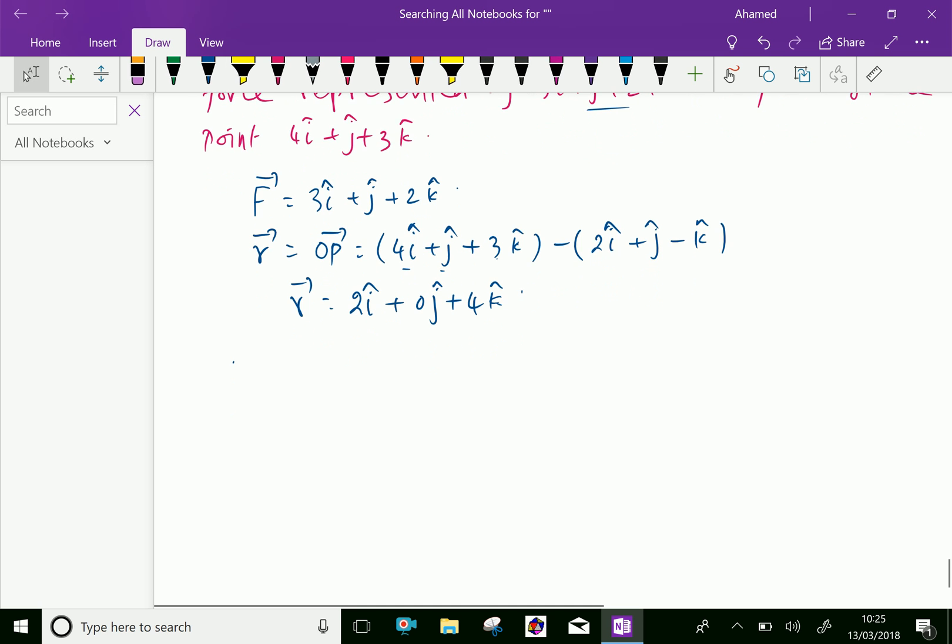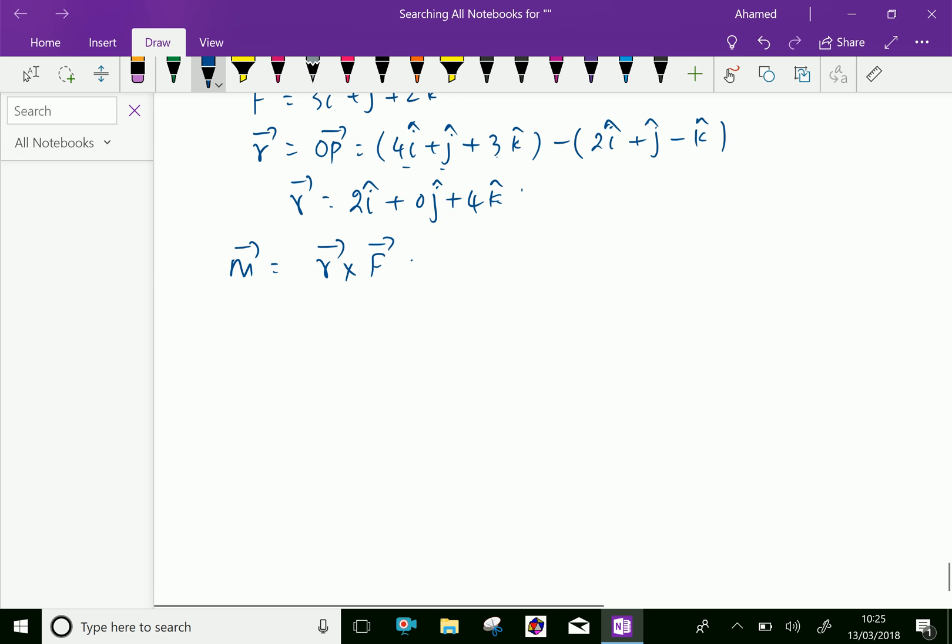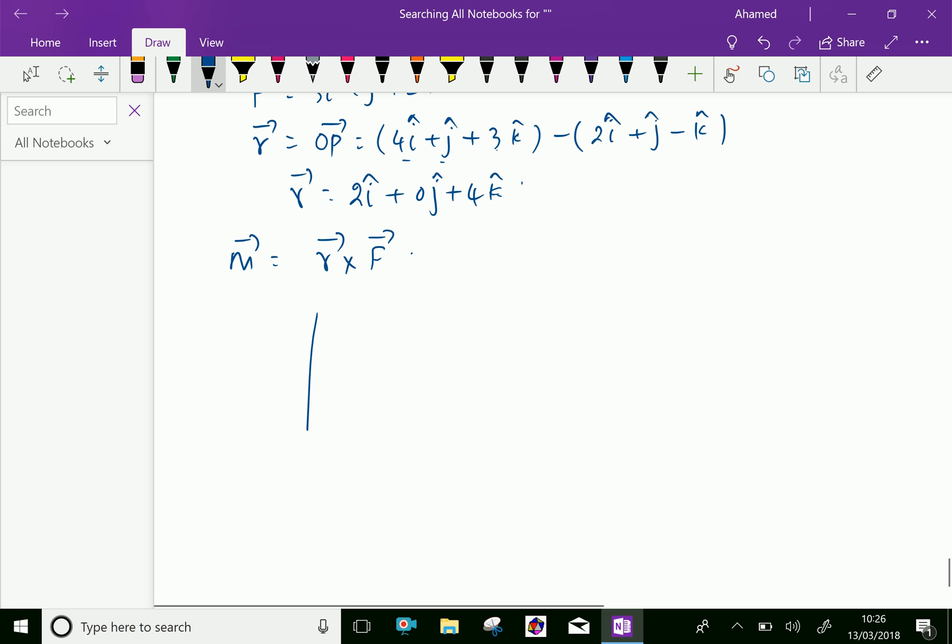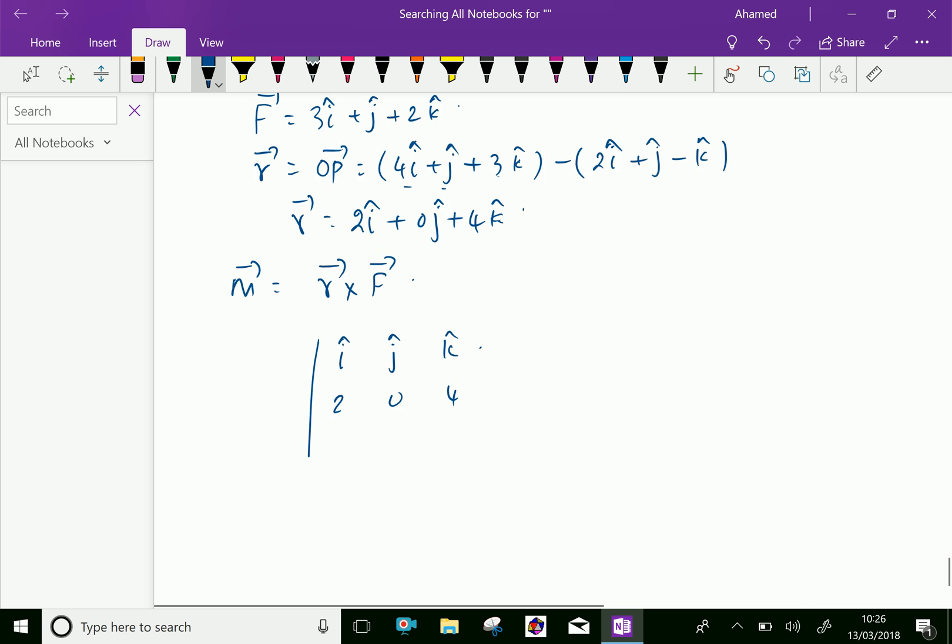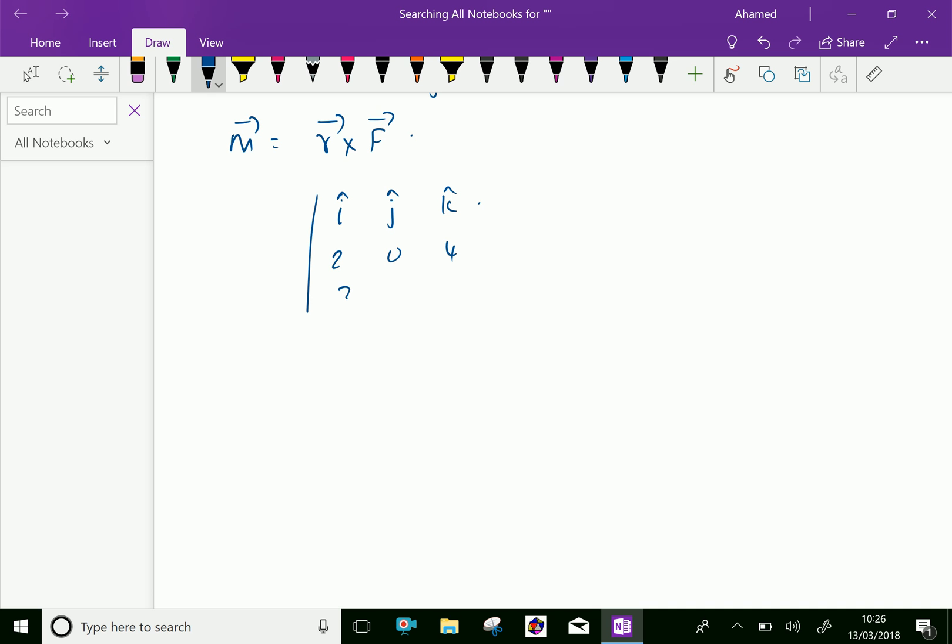Now, the vector moment of the force F vector is M vector equals vector R cross vector F. Here, vector R is i, j, k, the coefficients are 2, 0, 4, and F vector is 3, 1, 2.